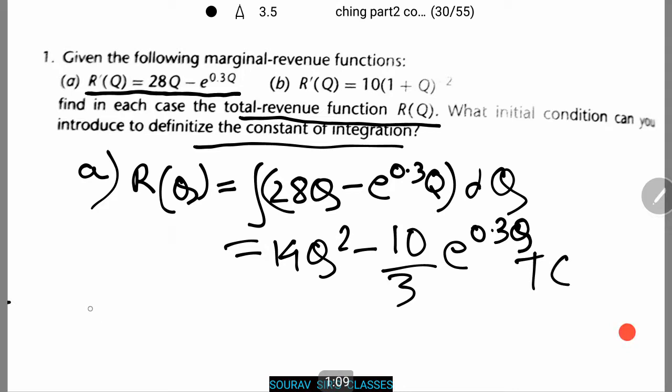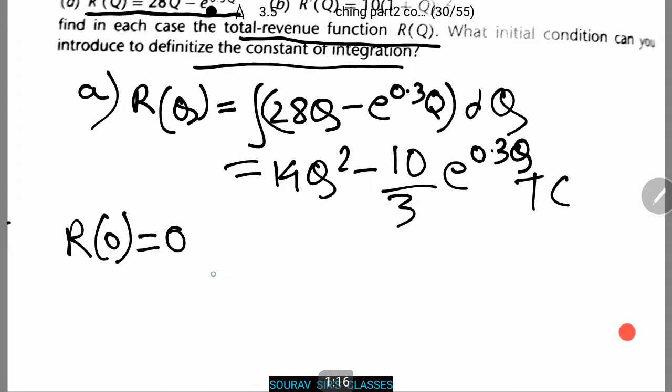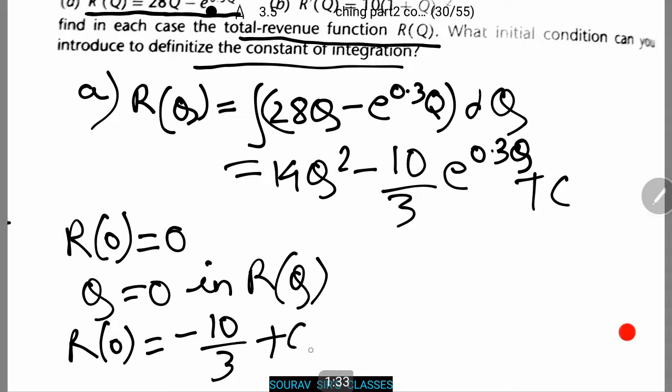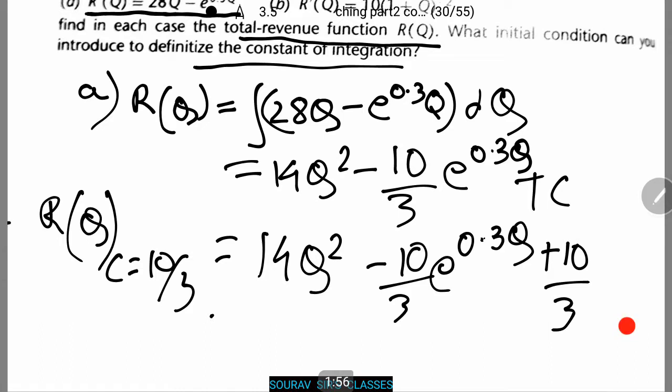The initial condition that is required is R(0) which equals 0. Now we set Q equals 0 in R(Q). Let's see what we find. We find that R(0) equals minus 10 by 3 plus C. Thus C equals 10 by 3. Now replace it in this function or equation, and this is the final answer for part a.